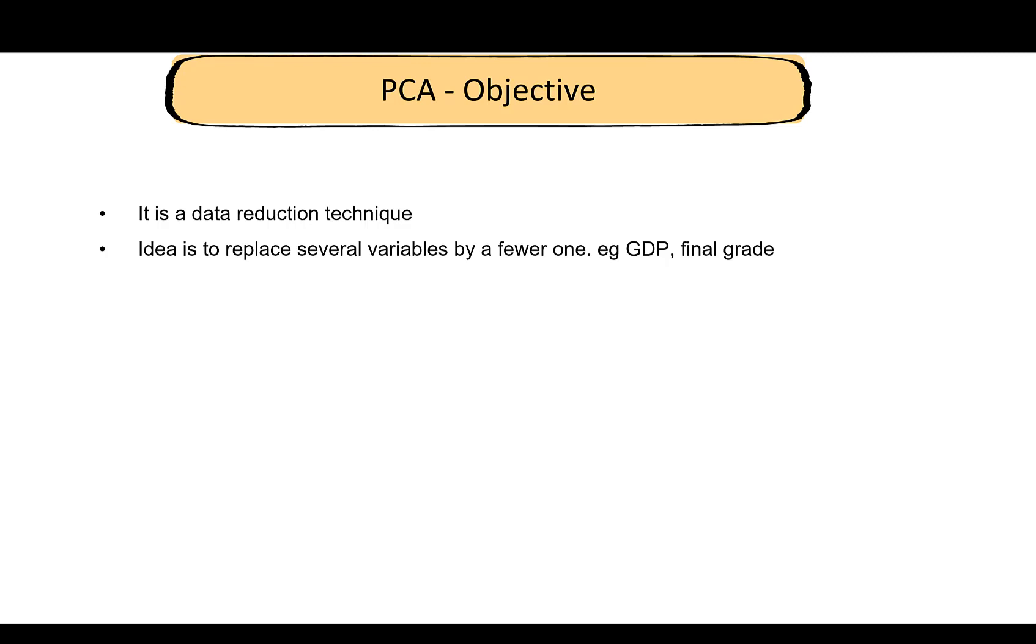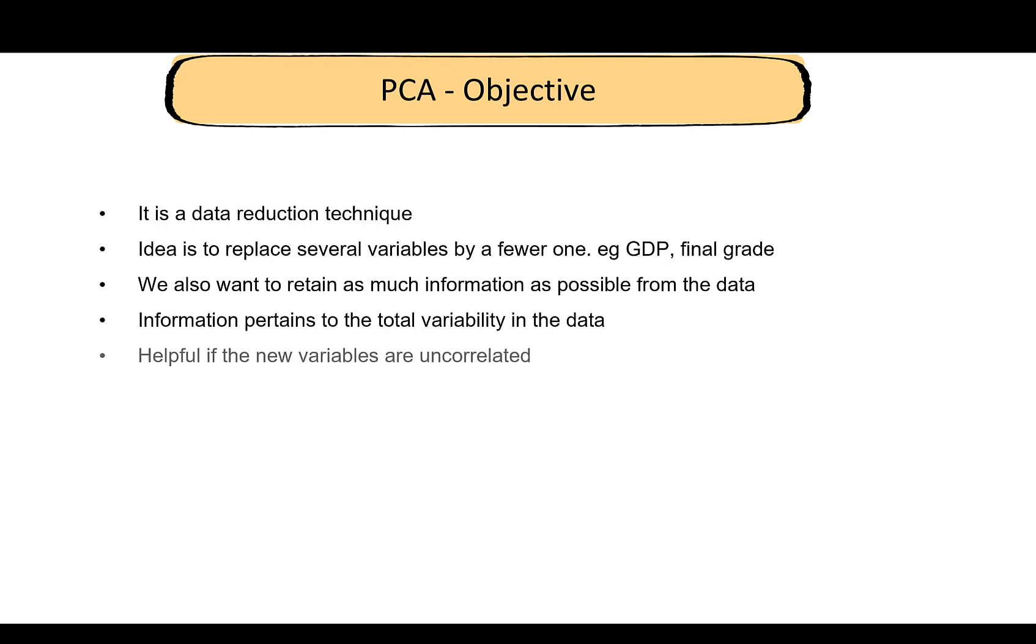PCA is a data reduction technique as well. We want to replace many variables by fewer ones, and when we do this we do not want to lose information. We want to retain as much information as possible from the data. What do I mean by information? Information in the data basically means variability in the data. I don't want to lose the variation or variability in my dataset when I reduce the number of variables.